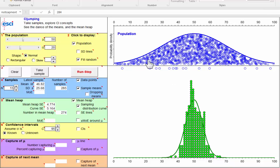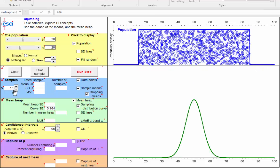Now let's look at populations of a different shape, say a rectangular population. And let's take samples of size 3, so artificially small samples. And here we're taking successive samples and dropping down the means to form the dance of the means for samples of size 3. And we're going to collect these into the mean heap down at the bottom.